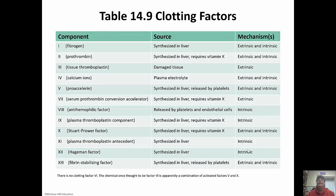This is a list of the clotting factors, 1 through 13 — yes, there are only 12. What used to be thought of as factor 6, through further analysis, turns out to be just a combination of factors 5 and 10.